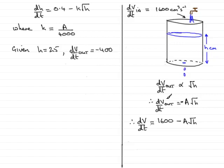So when I look at this equation here, what I see is that therefore minus 400 must equal minus a times the square root of h. In other words, the square root of 25. That's just by substituting those values into that equation.